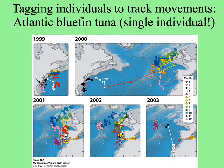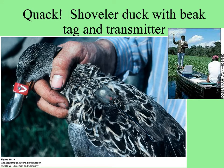Animals can be tracked by putting a telemetry device that emits a signal on or in their body. Studies of fish like Atlantic bluefin tuna have shown they move great distances — a single tagged individual was recorded on the east coast of the U.S. but also traversing the ocean to northern Europe. These transmitters aren't always comfortable, but here's a shoveler duck with a beak tag so people can recognize individuals from a distance, plus a transmitter to show where they've moved.